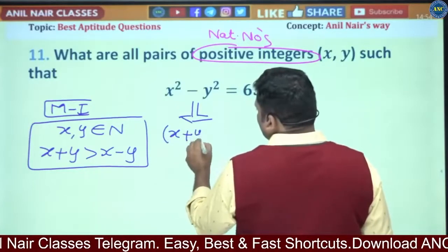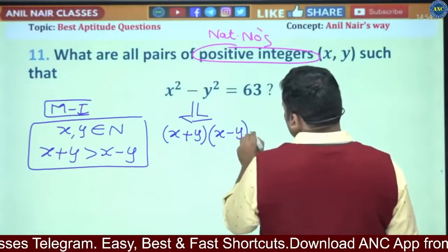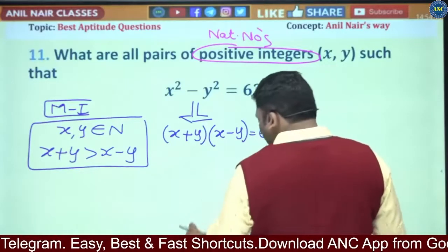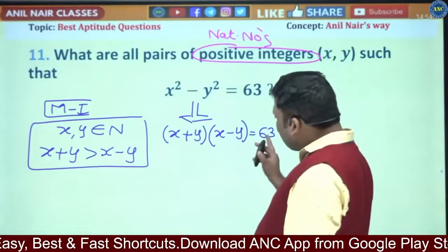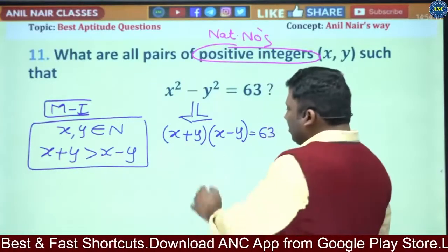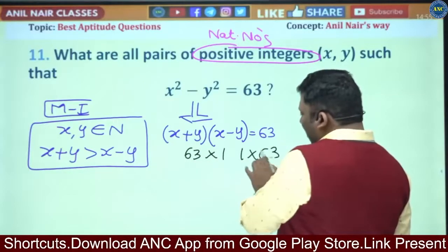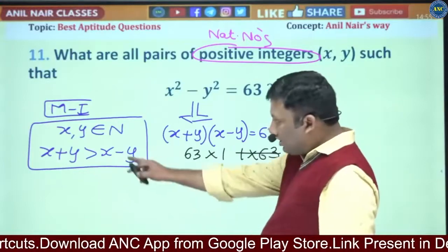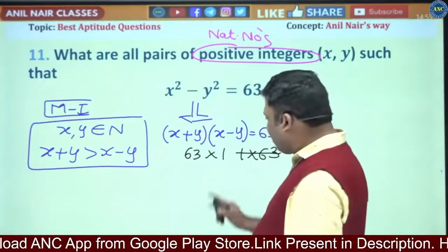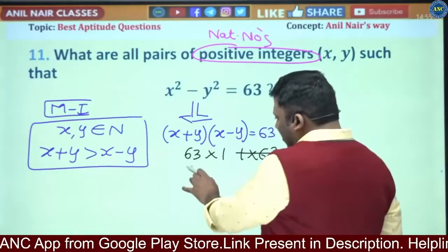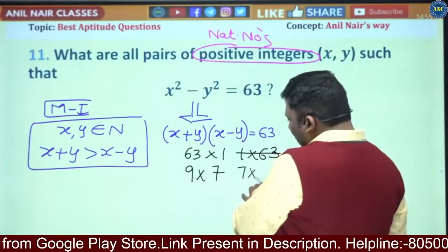x squared minus y squared equals (x+y)(x-y) = 63. Now, 63 can be written as 63×1 — but we will not write 1×63 (the reverse). We also have 9×7 — and we will not write 7×9 (the reverse), because the sum of two natural numbers is always greater than their difference.